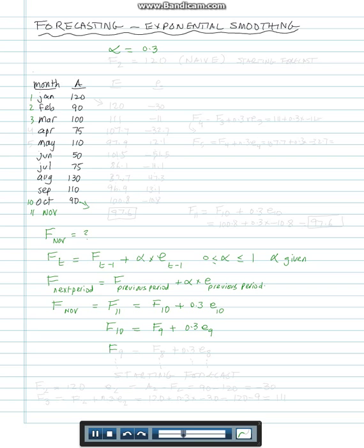You're seeing where this is going. If we want the forecast for September, we need the forecast for August plus the error for August. We need to keep going up until you can give me a starting point. Once I have a starting forecast, then I can calculate the next period and the next period until I get to F November.